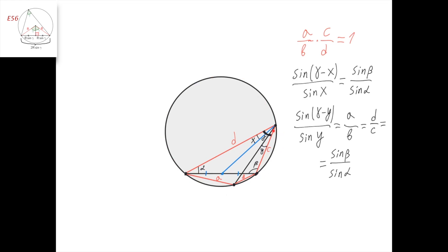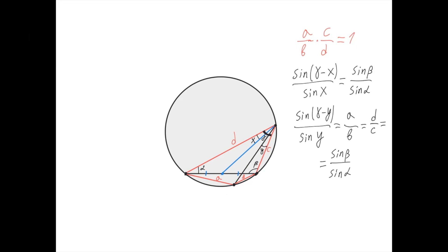And let's apply this theorem for this triangle. We get that b equals 2 times r sine of y. And therefore a divided by b equals 2r sine of gamma minus y over 2r sine of y. The 2r cancels out and we get sine of gamma minus y over sine of y.